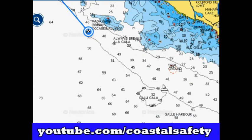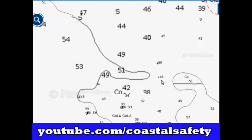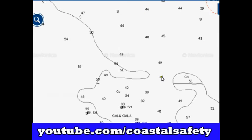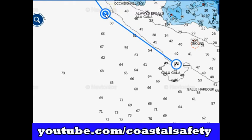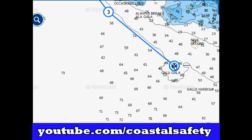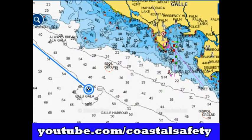Coming down the coast we now want to start making our way in. Have a look here — this is probably a good place to start. We're going to head into the bay. Let's just adjust these a little bit so it keeps us outside that 50 meter contour and gives us a little bit more peace of mind.